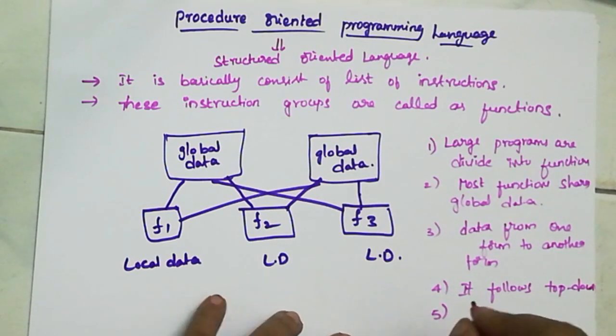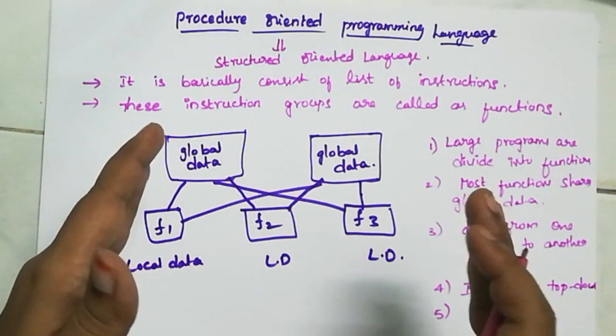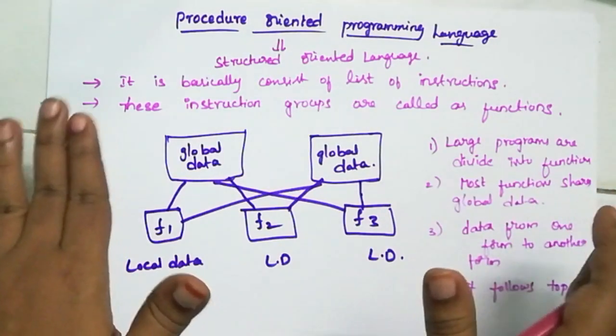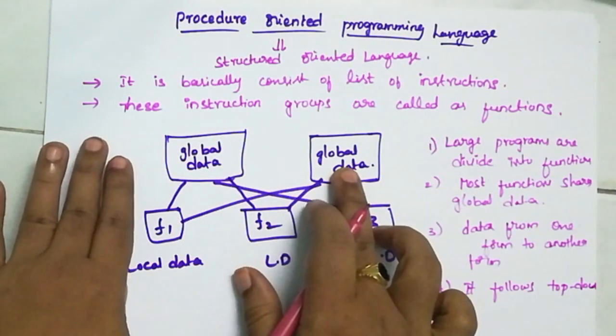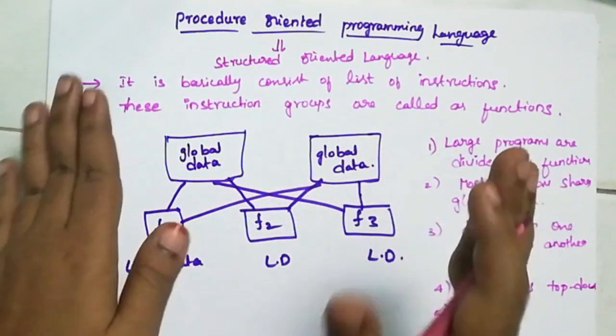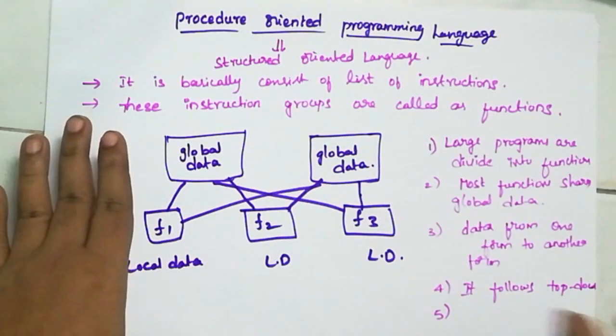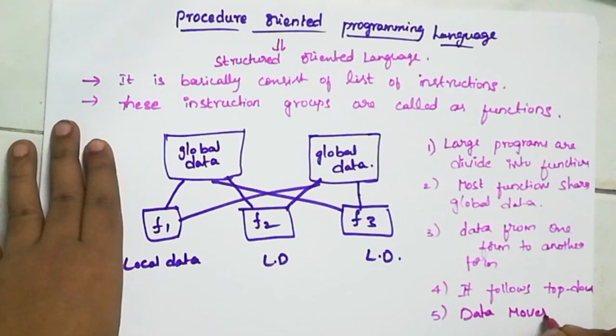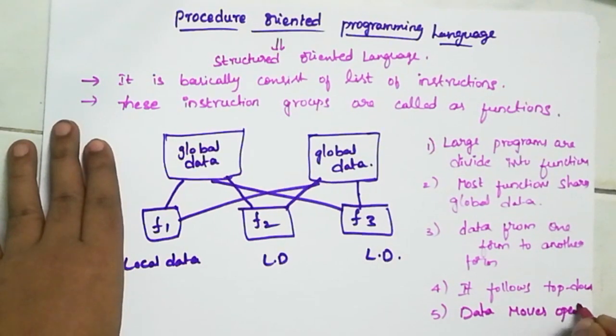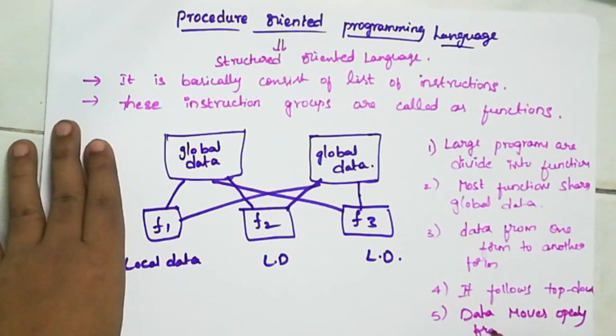So next, fifth one: here data openly from function to function. So this data moves openly from function to function.